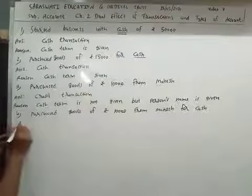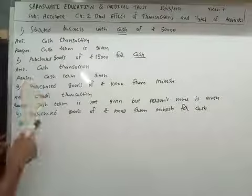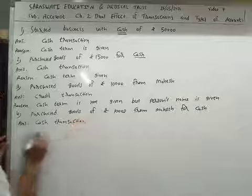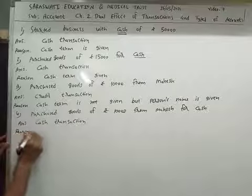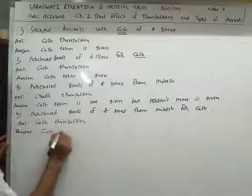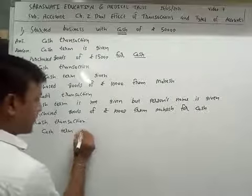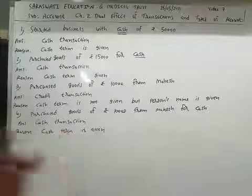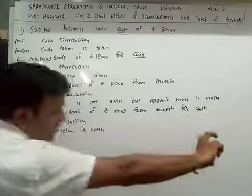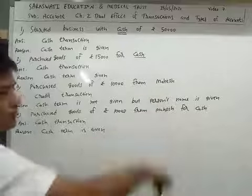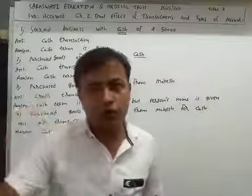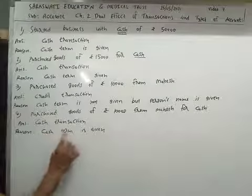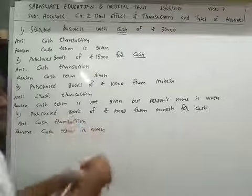You will write the answer: cash transaction. The reason is short and simple — cash term is given, therefore it is a cash transaction. If both person's name and cash term are given, cash term takes priority. So the answer is: it is a cash transaction because cash term is given.